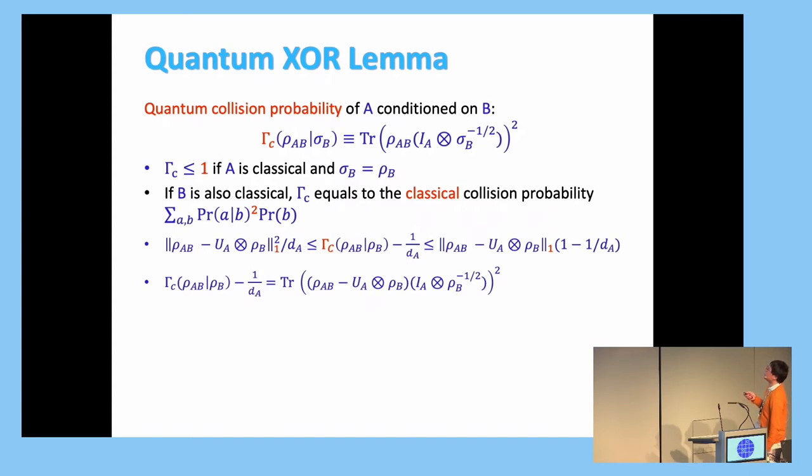And so the good properties of this thing is first, there is the bound between, I like to think this as bound between the one-norm and the two-norm. So the trace distance with uniform and the collision probability can bound each other. And this is like a triangle. And also you can just expand the middle term. This is an easy equation to check.